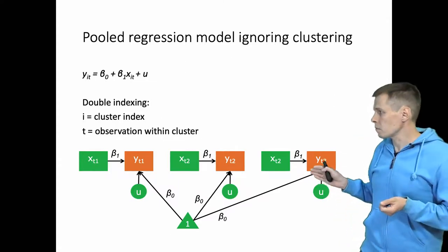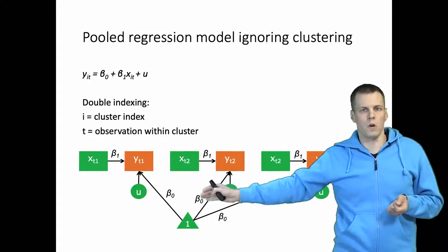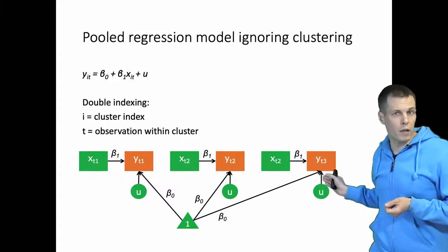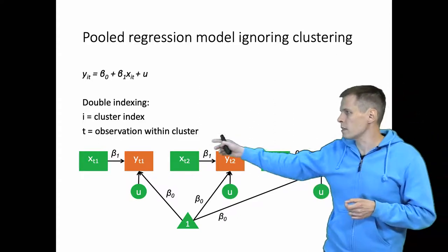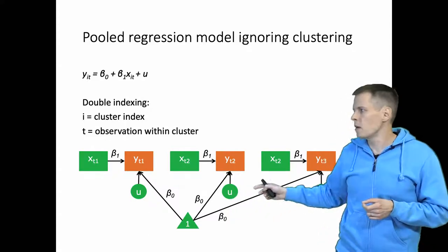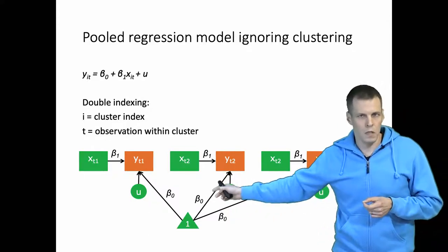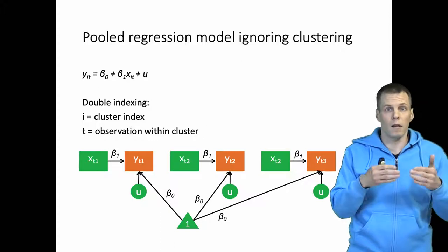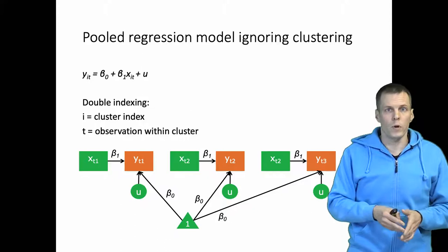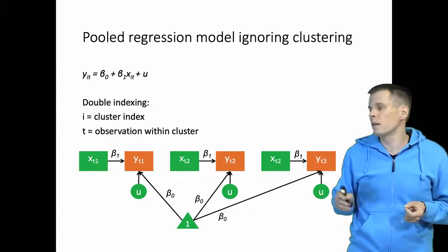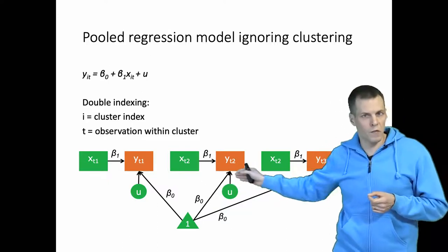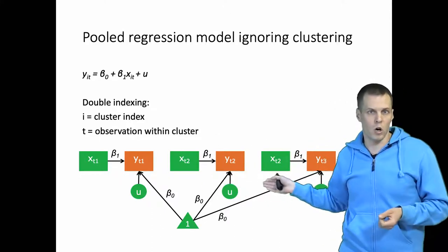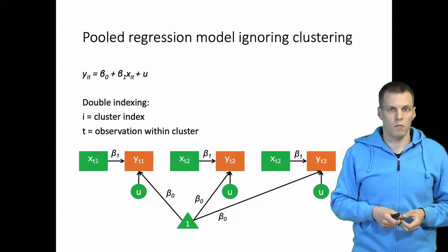We specify this model in our structural equation modeling software: we regress Y1 on X1, Y2 on X2, and Y3 on X3. We constrain the coefficients to be the same, constrain the intercepts to be the same, and the error variances are the same. We specify that the errors are independent. These regression paths are shared between the three models. This gives you the normal regression results from SEM — equivalent to estimating a regression using long form data.